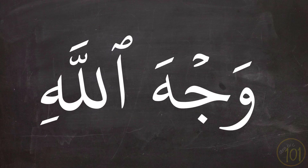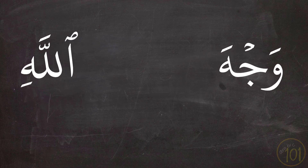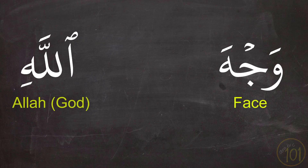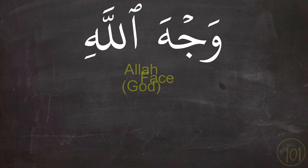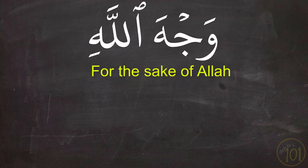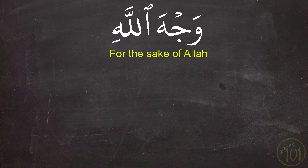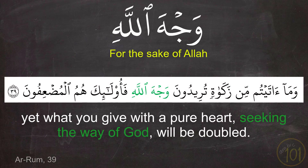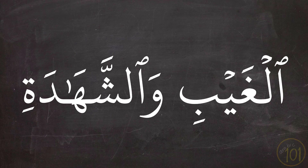The next combination is وَجْهَ اللَّهِ, made up of وَجْهَ, meaning 'face,' and Allah. This combination means 'for the sake of Allah.' We see it used with this meaning in the example: وَمَا آتَيْتُم مِّن زَكَاةٍ تُرِيدُونَ وَجْهَ اللَّهِ فَأُولَٰئِكَ هُمُ الْمُضْعِفُونَ.